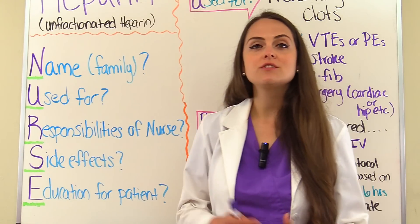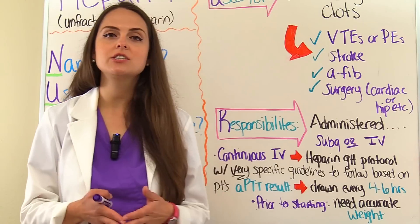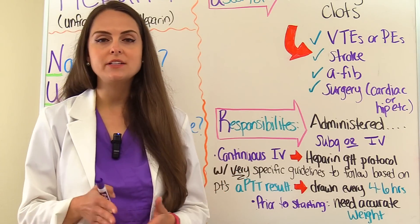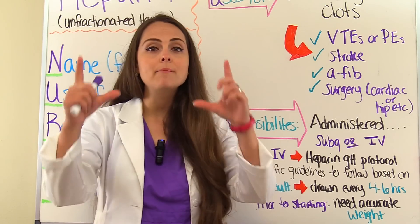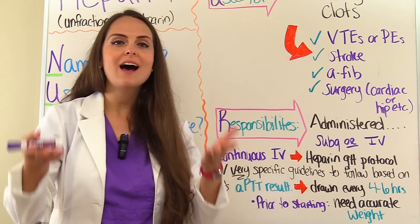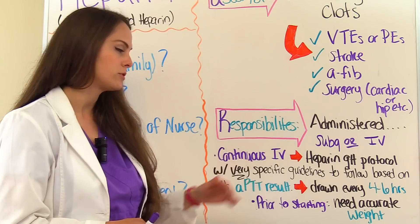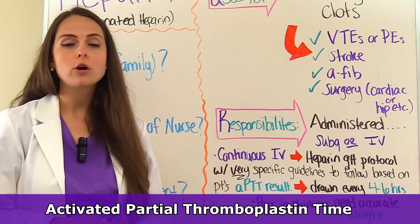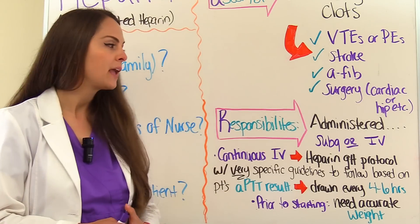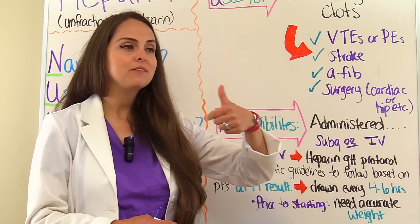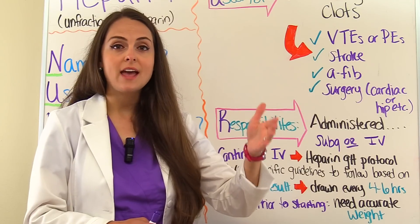Let's talk about the responsibilities of the nurse for a patient on heparin. Heparin can be given through an injection via the fatty sub-Q tissue or intravenously through a continuous infusion. With the continuous IV route, we hang a bag referred to as a heparin drip. We titrate this drip based on a protocol with specific guidelines based on the patient's APTT result — activated partial thromboplastin time. Based on the result, we will increase the drip, give a bolus, turn the drip off for an hour, decrease the rate, or make no change until the next APTT result.